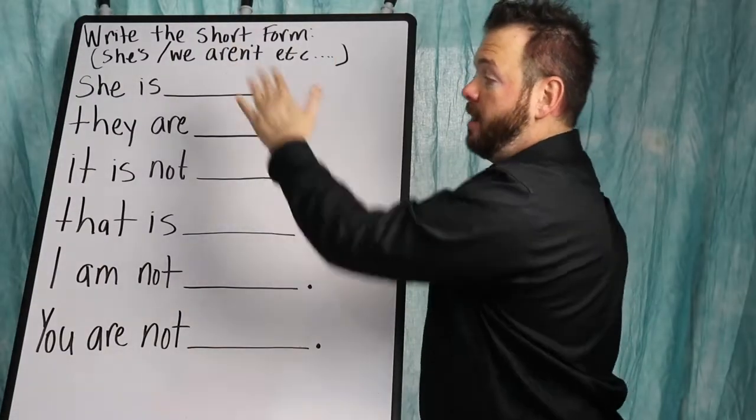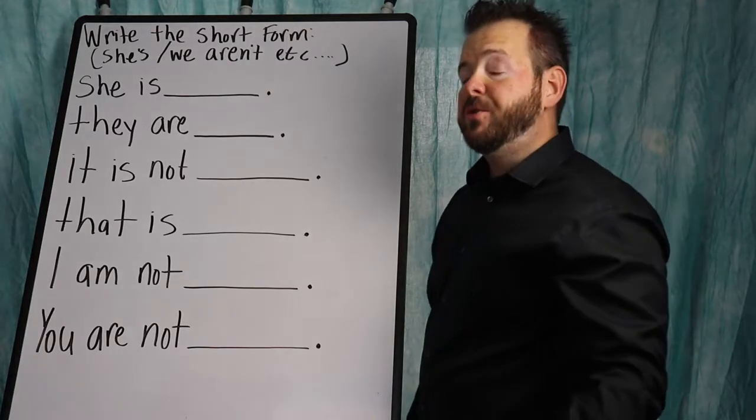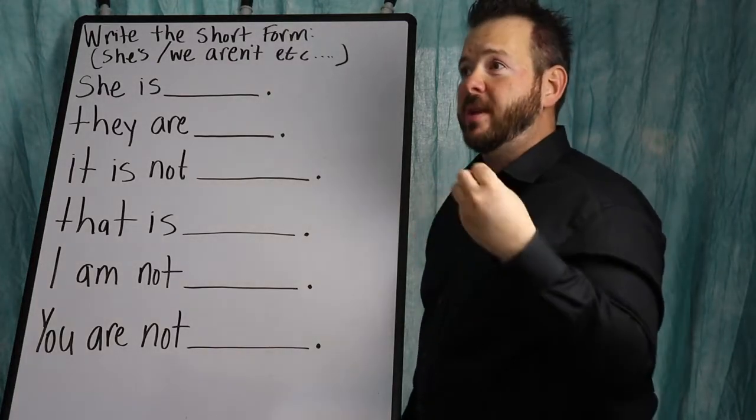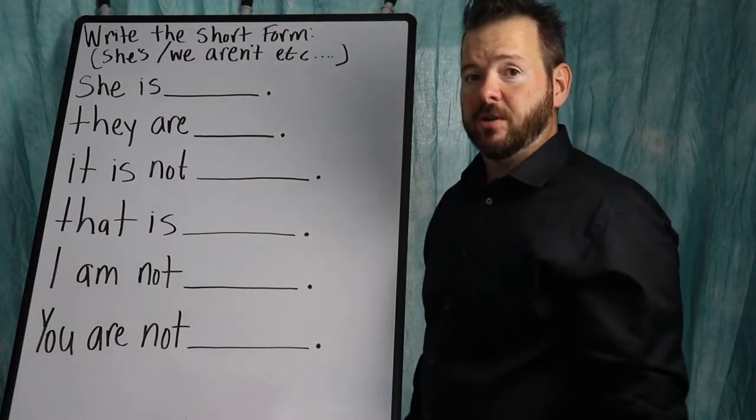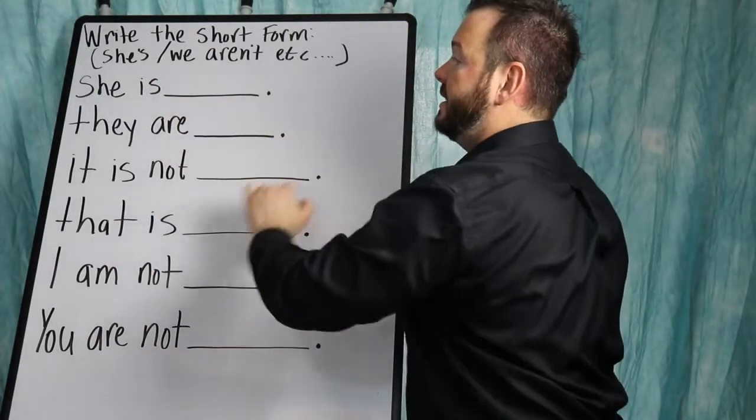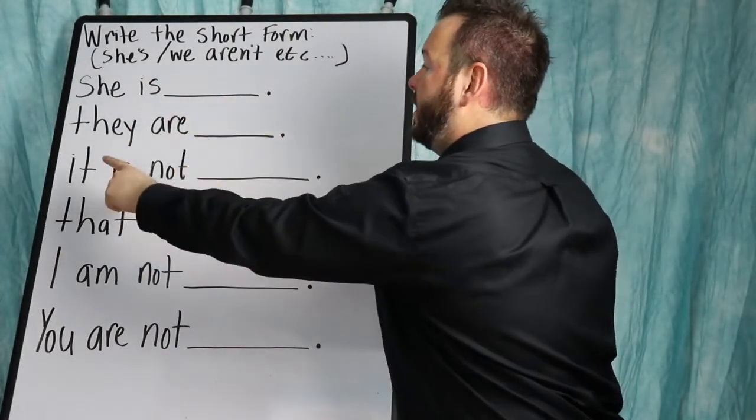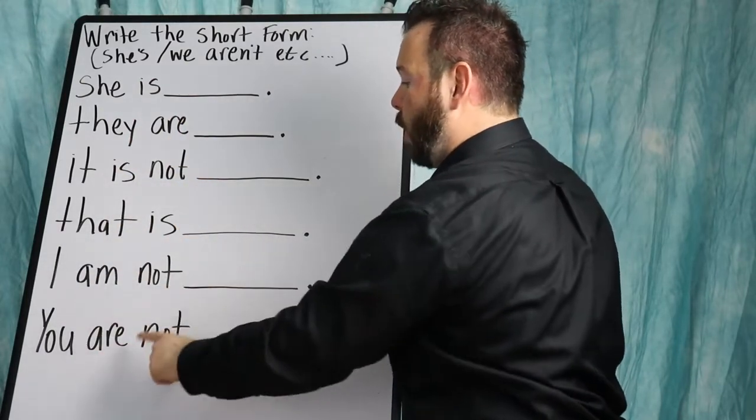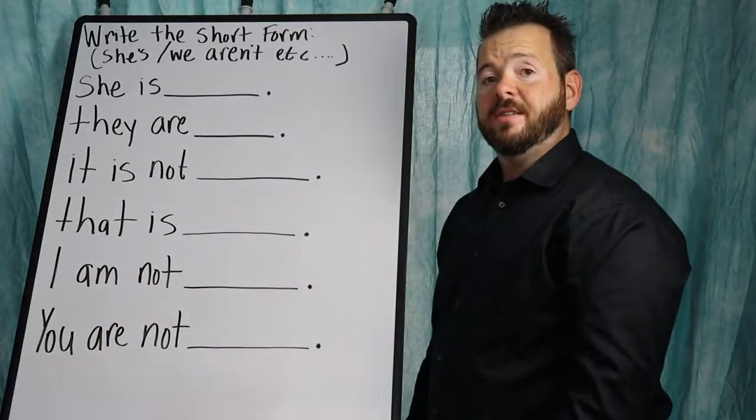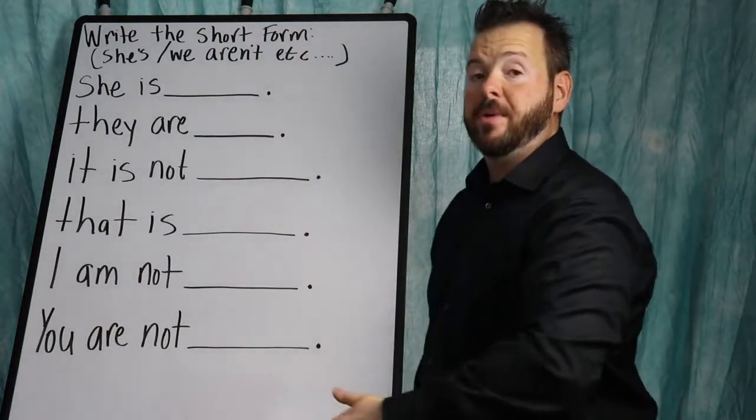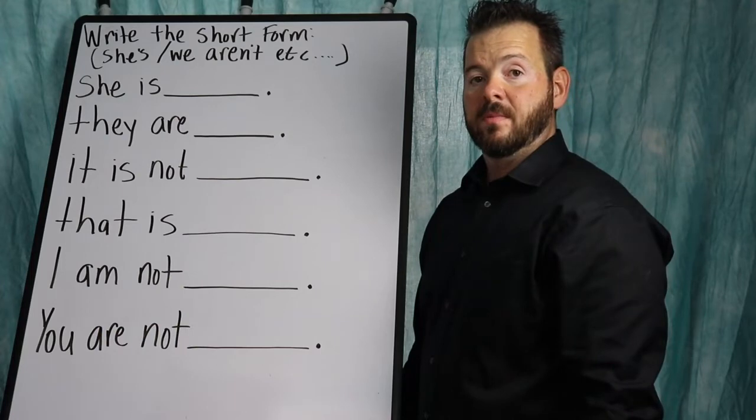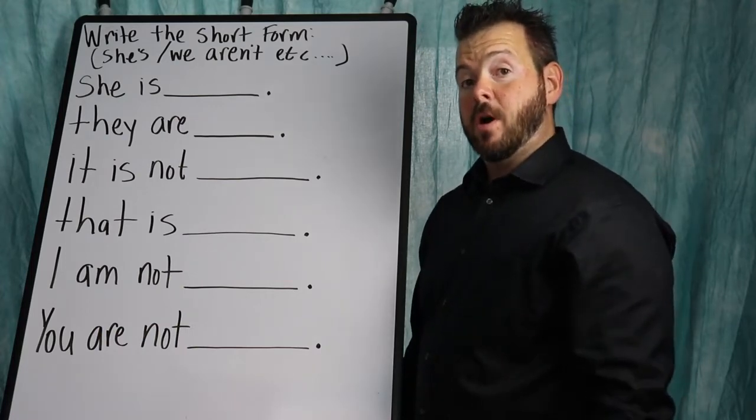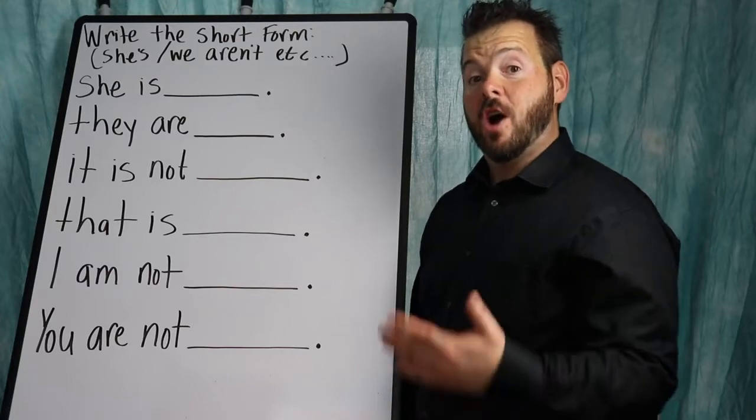I'm going to write the short form of the following. I'll read them to you so you can hear what they sound like. It's always good to listen to what things sound like so it will perfect your language. She is, they are, it is not, that is, I am not, you are not. Pause the video for a moment so you can copy everything down.